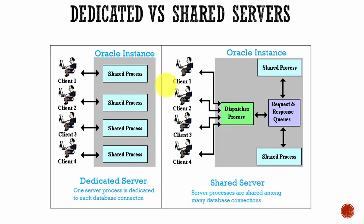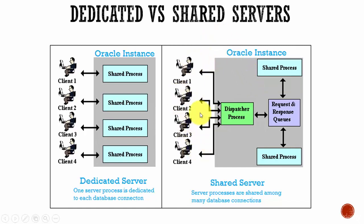So Oracle came up with a concept of shared server database. In the shared server database, all the users will share the server processes sitting in the Oracle instance. That means one shared server process is used by many connected users. This provides scalability — a huge number of users can connect without the need of creating individual processes for each user.